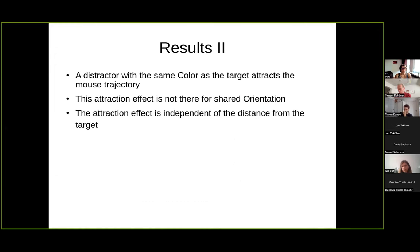To recap: what we found is that same-color distractors have an attraction effect on mouse trajectories. The same effect is not there if the distractor shares orientation with the target. And the effect is present for all distances from the target to the distractor. Since color and orientation are both features that should guide visual search according to some studies, we wanted to know why only color has this effect and not orientation.